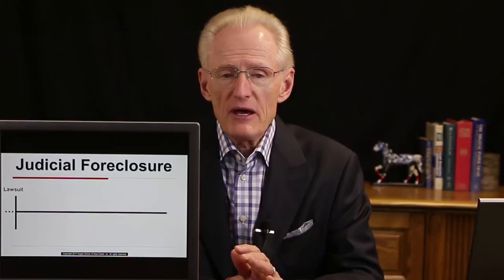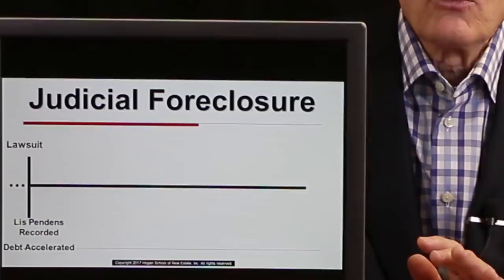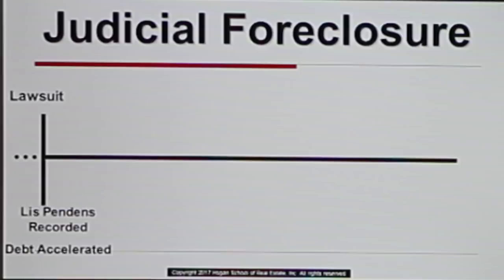The lender hires an attorney, who files papers in court beginning the lawsuit. At the same time, a lis pendens is recorded, which red-flags the property through the recorder's office to anyone searching the records that this property is in litigation — in foreclosure. Lis pendens literally means 'litigation pending' in Latin. At the same time, the debt is accelerated: the lender declares the entire balance on the loan immediately due and payable.